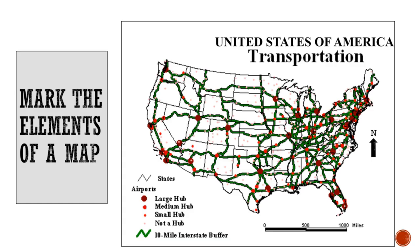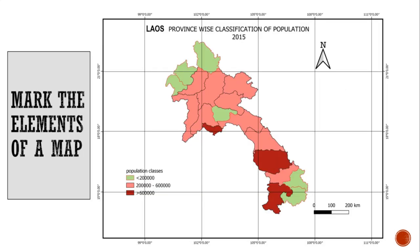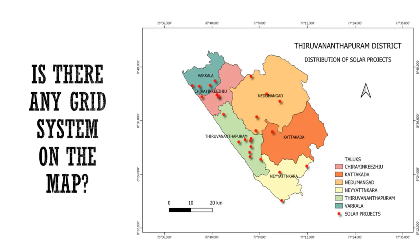Here is your exercise. Exercise one: take a screenshot of this page and mark the elements of a map on it. Exercise two: take a screenshot of this page as well and mark the elements on it. Is there any grid system on this map? Comment your answer in the chat box.